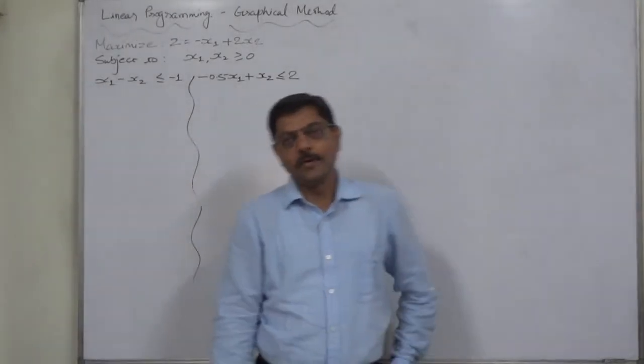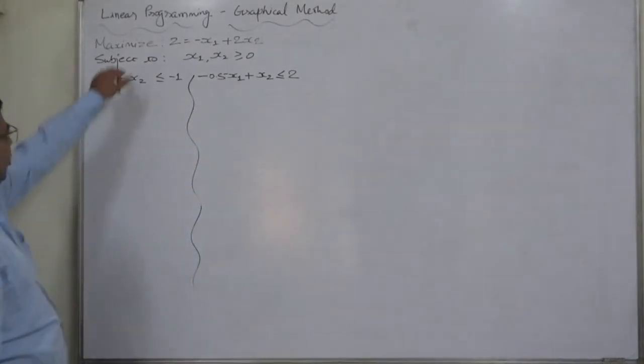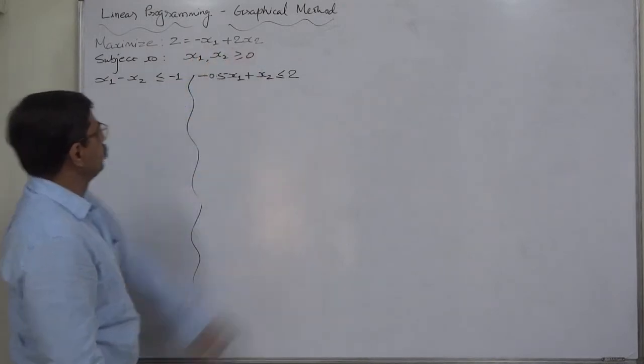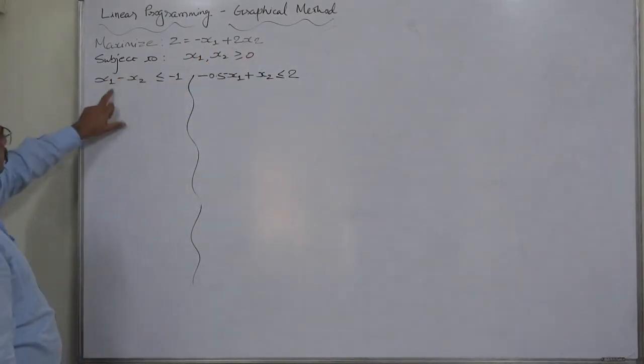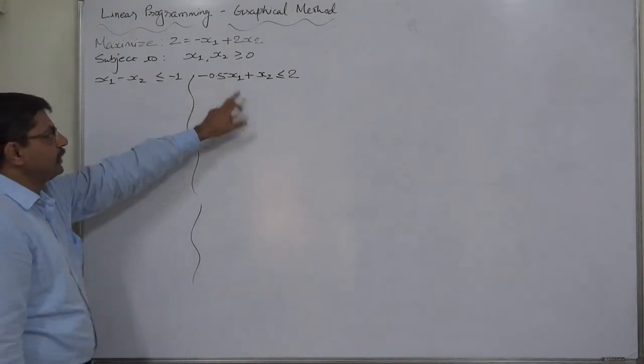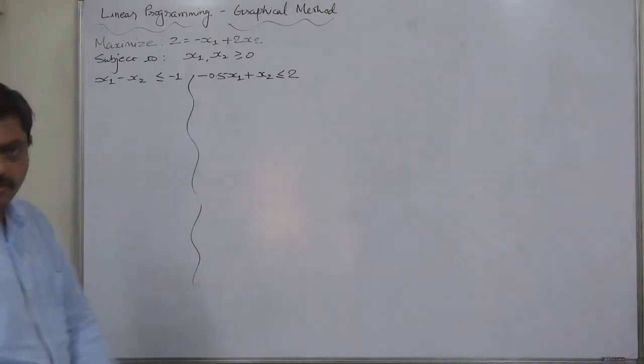Hello and welcome. One more case in linear programming graphical method of solution. The problem is maximize z equals minus x1 plus 2x2, subject to x1 minus x2 less than or equal to minus 1, minus 0.5x1 plus x2 less than or equal to 2, and x1 and x2 both are non-negative.